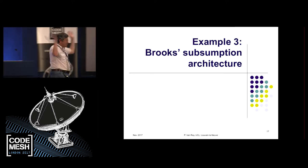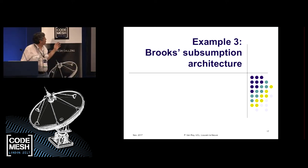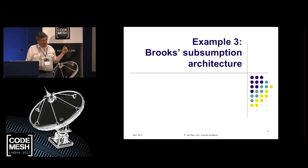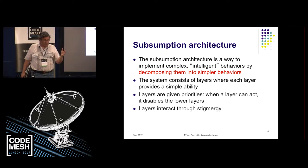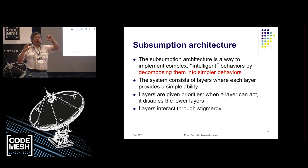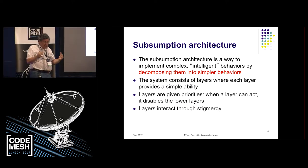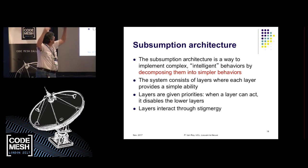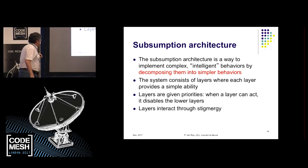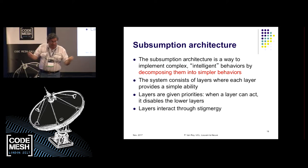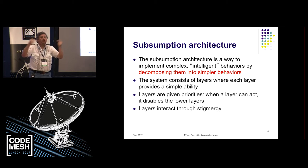Let me give another very different example: the subsumption architecture from Rodney Brooks, from the 1980s — an AI pattern for implementing complex behaviors by decomposing them into simpler behaviors. One behavior can override another. You have a layered system: a lower layer does something; it can be overridden by the next layer. Layers are priorities — when a higher layer acts, it disables the lower layers. They interact through stigmergy, meaning the layers affect the actual system rather than communicating directly through each other.